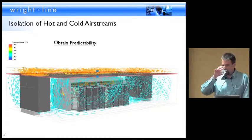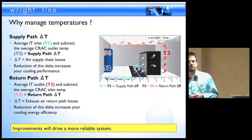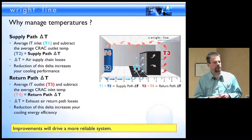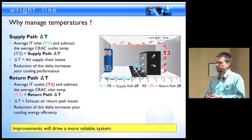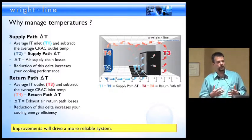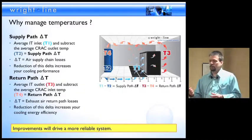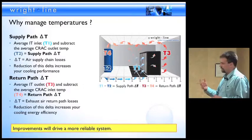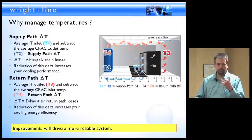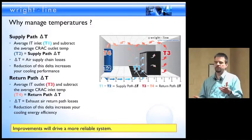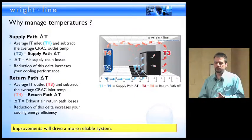A little bit about why they're doing this: supply path delta T and return path delta T. The supply path is the actual temperature coming out of the HVAC equipment and the temperature making it through the IT equipment. They want to get that delta temperature as low as possible so they can drive predictability into their HVAC system. Conversely, they manage the return path delta T—the temperature exhausted from the IT equipment to the temperature realized by the fan coil units. If they manage that return path, they can drive efficiency into their HVAC equipment, getting performance out of the supply path and efficiency out of the return path.